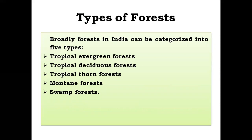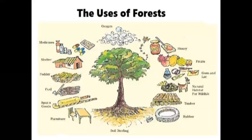Forests are broadly classified into five types when we talk of India: tropical evergreen forests, tropical deciduous forests, tropical thorn forests, mountain forests, and swamp forests. Here is a pictorial presentation of the uses of forests.